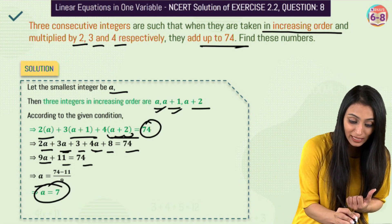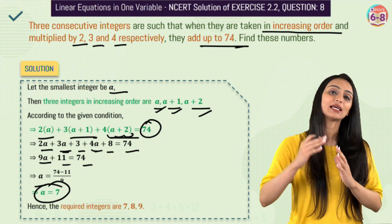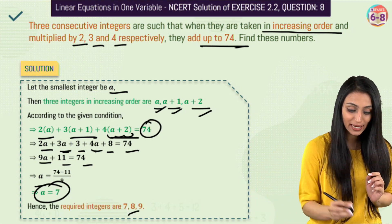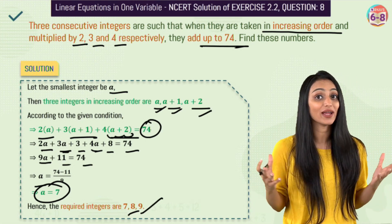Now that I have the value of a, I can get the value of the other three integers, which is: the first one is 7, second one is a plus 1, which comes after that, that's going to be 8. Third one is a plus 2, which comes after that, that's going to be 9. So we have our required three integers.